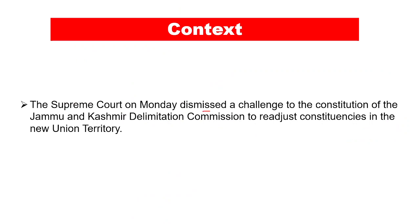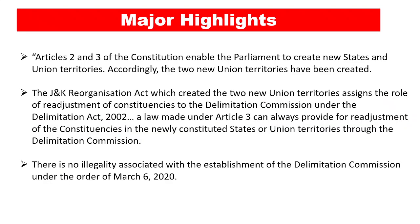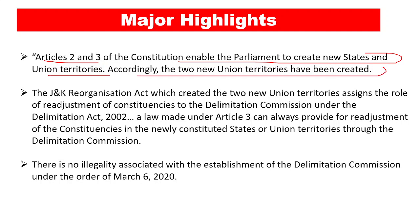The Supreme Court on Monday dismissed a challenge to the constitution of the Jammu and Kashmir delimitation commission to readjust constituencies in the new union territory. This challenge was regarding the constitution of the delimitation commission in the state of Jammu and Kashmir. The Supreme Court stated that Articles 2 and 3 of the Constitution enabled the Parliament to create new states and union territories, and accordingly two new union territories have been created.